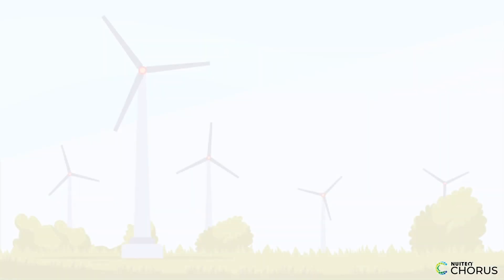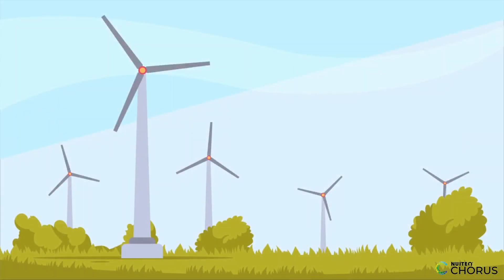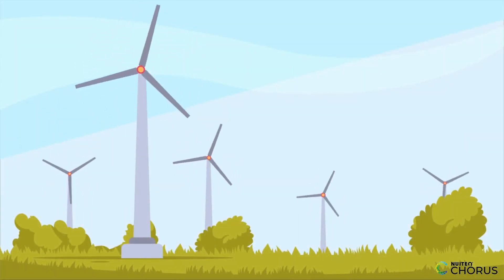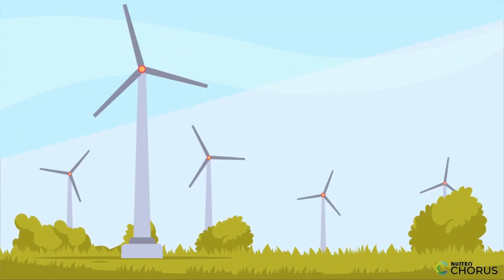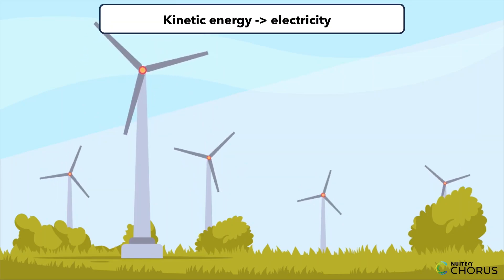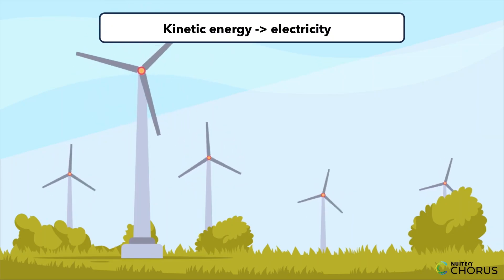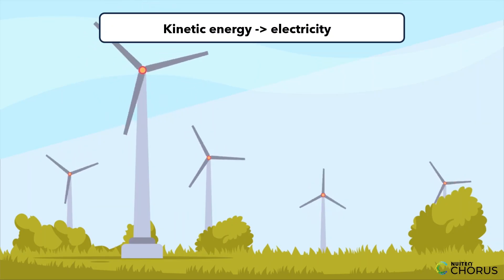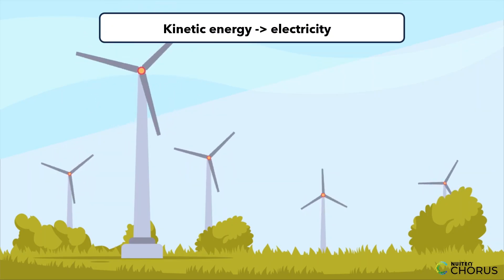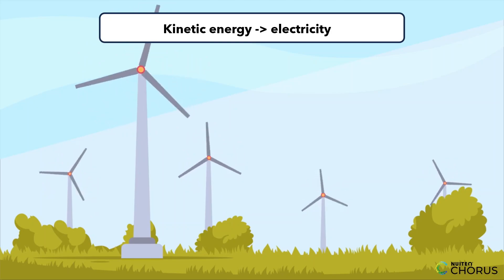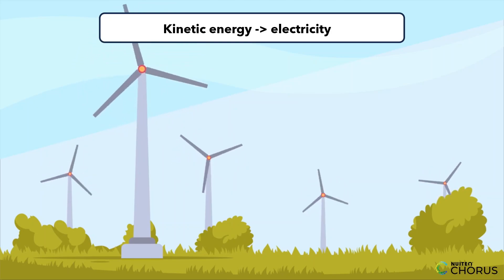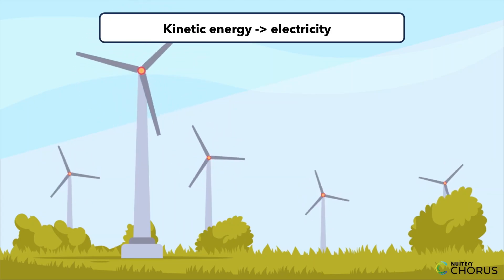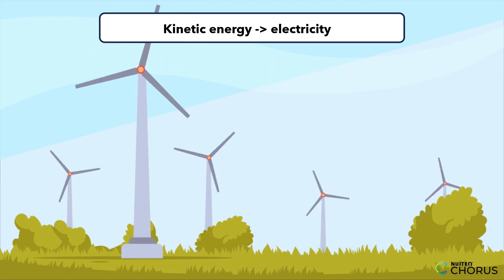Lastly, let's journey to a wind farm. The towering turbines harness the kinetic energy of the wind, converting it into electricity to power homes and businesses. This example demonstrates the practical applications of motion and energy transfer in sustainable energy production.